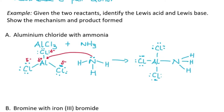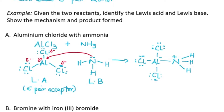Since aluminium goes from neutral to gaining one more bond, it acquires a negative charge. Nitrogen goes from three bonds with one lone pair to four bonds with no lone pair, giving nitrogen a positive charge. Therefore, aluminium chloride behaves as a Lewis acid — an electron pair acceptor — and ammonia is the Lewis base — an electron pair donor.